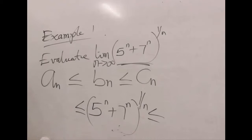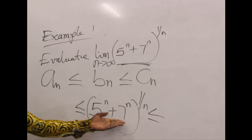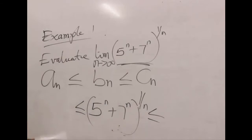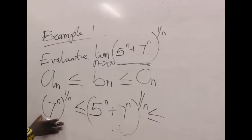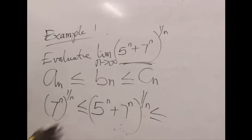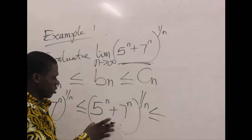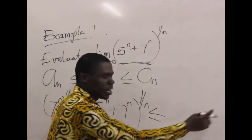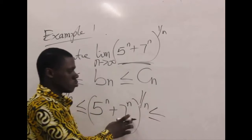So if we look at it, we have 5^n and 7^n. We realize that 7^n raised to the power 1 over n is less than or equal to (5^n + 7^n)^(1/n), because starting with just 7^n is obviously less than or equal to the full expression. So this part of the condition has been fulfilled.